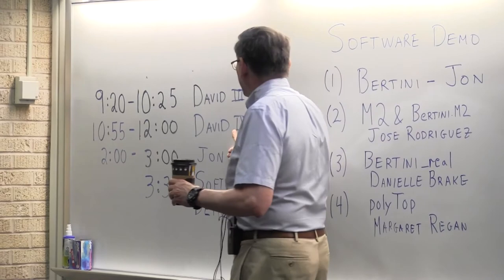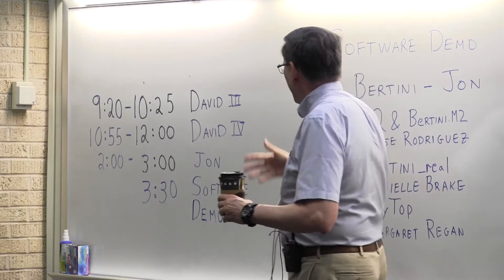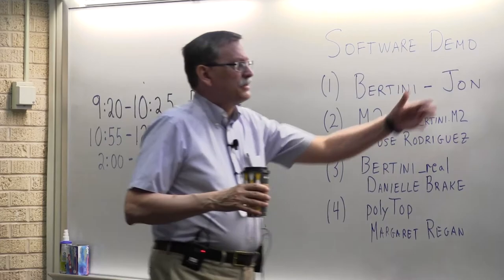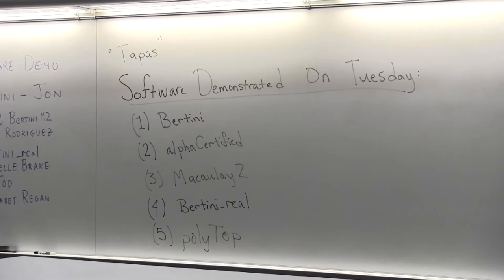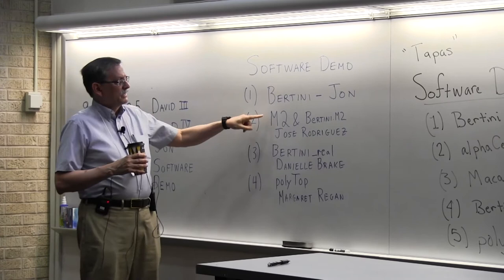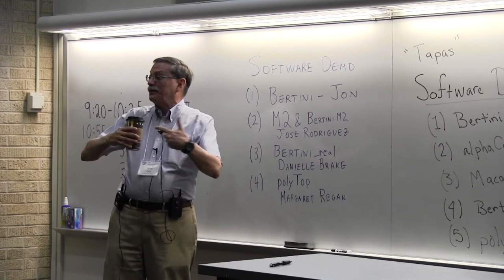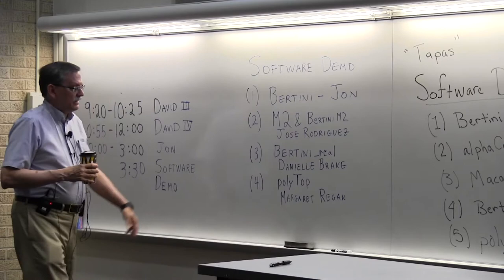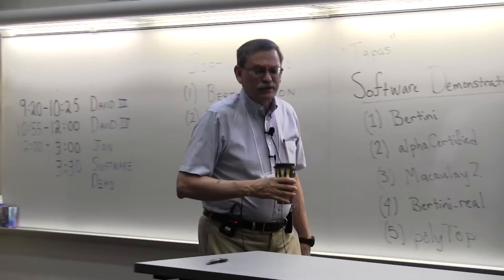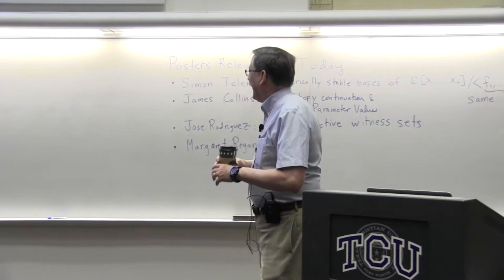After lunch, John will talk about some more recent work in numerical algebraic geometry. At 3:30 we have the software demo, featuring software including Bertini. John will start and tell us a little about Bertini. Jose will tell us about Macaulay 2 and Bertini.m2 — I assume that's an interface between the two programs. Then there's the Bertini reel that Danielle is going to tell us about, and Margaret will tell us about Polytop. Yesterday we had a wonderful poster session, and I thank everyone who contributed a poster.